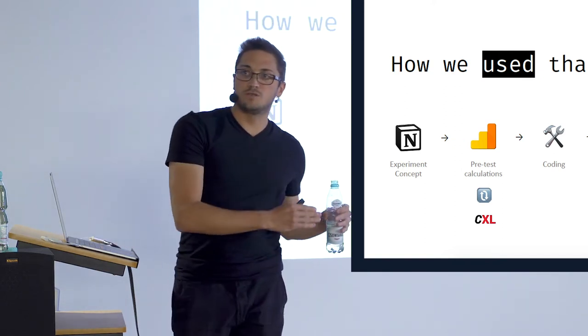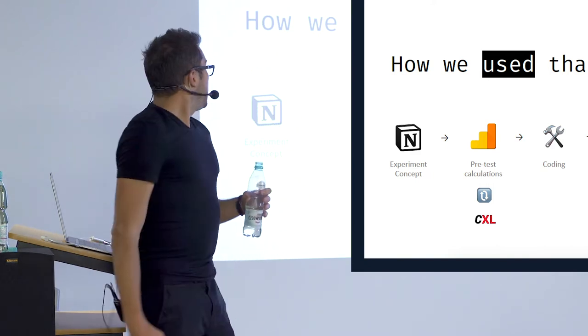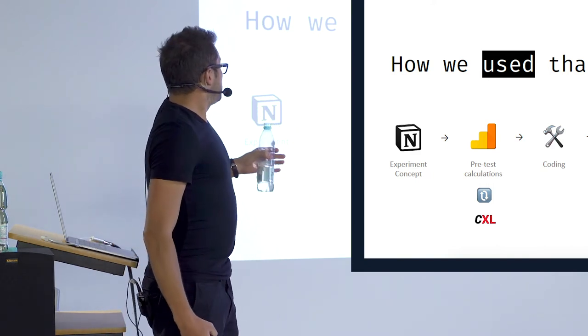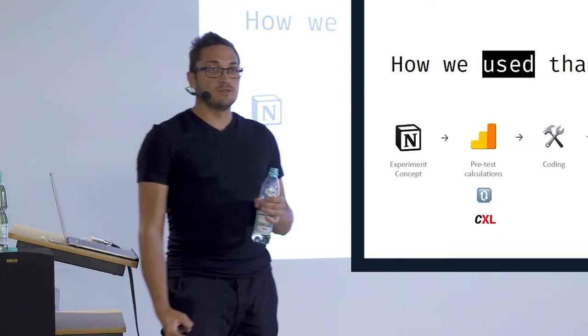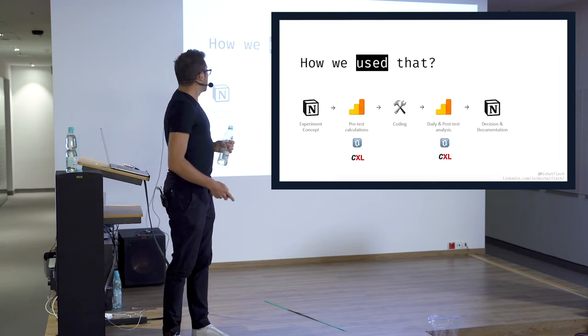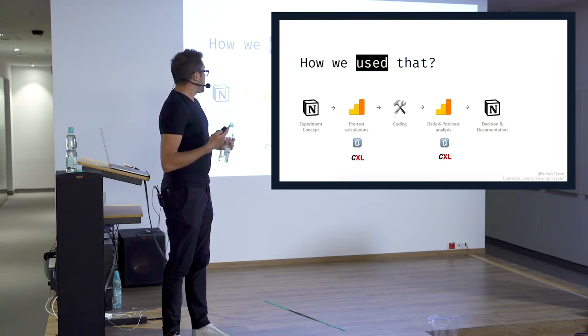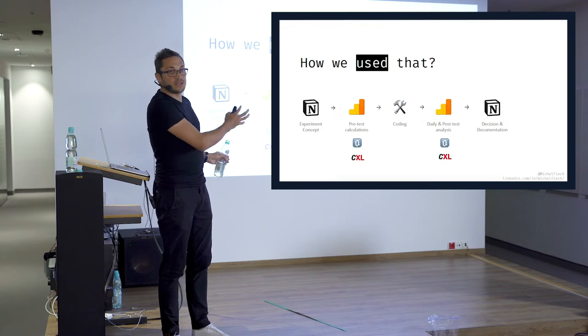And how we use that? How the process looked at the very beginning when we started doing experiments? It was quite simple. First, we had the experiment concept. So it was the scope of changes, and also the why, what, and how behind the experiment. Who do we want to target, what we will change, and why we think it will work.